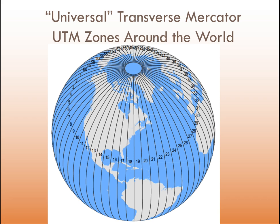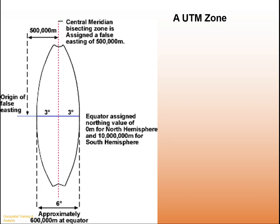That brings us to the Universal Transverse Mercator, or UTM. The earth is split into 60 zones, each six degrees wide — 60 times 6 equals 360 degrees. It starts at the International Date Line and counts in a counterclockwise direction. Calgary is located near the boundary of zones 11 and 12, so you will see references to both zone 11 and zone 12.